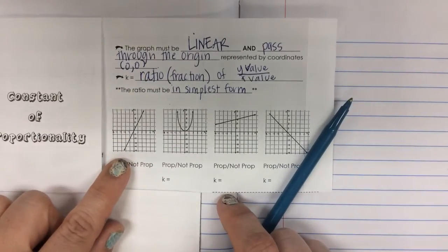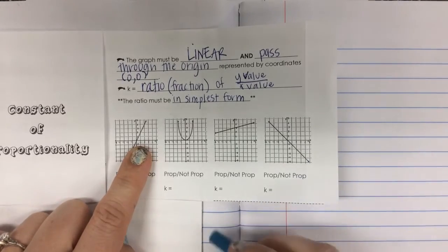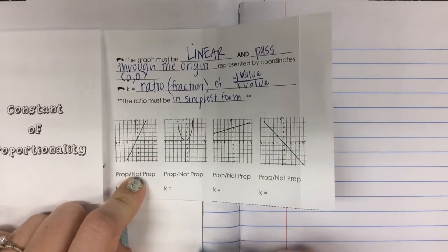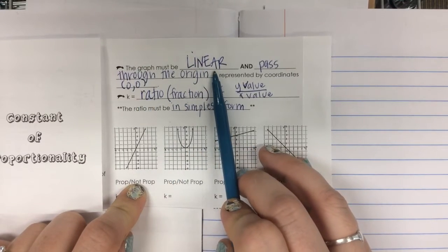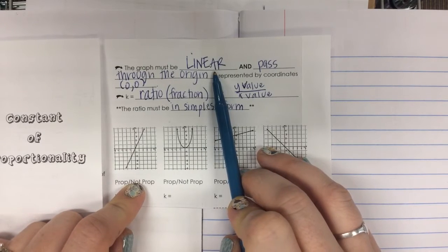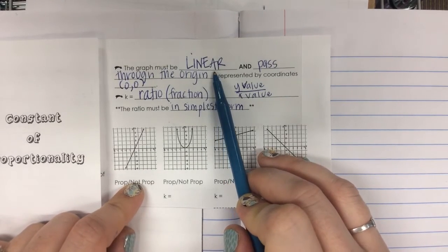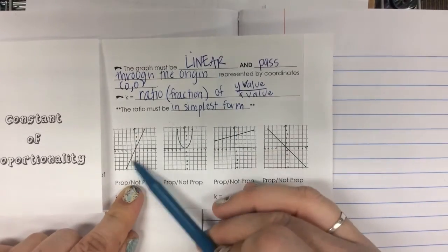So let's talk it through. Is this guy right here, this first one, is it proportional or not proportional? Let's see. Let's check. Is it linear? What does linear mean? A straight line. No bends, no curves, no twists and turns. Yes, it's a straight line.